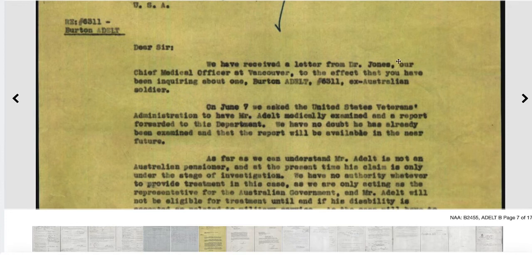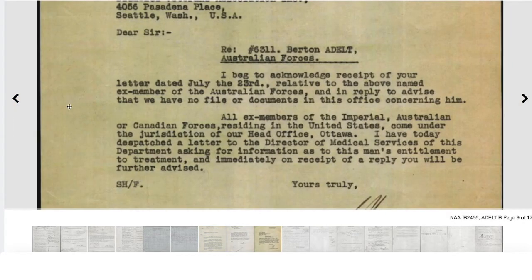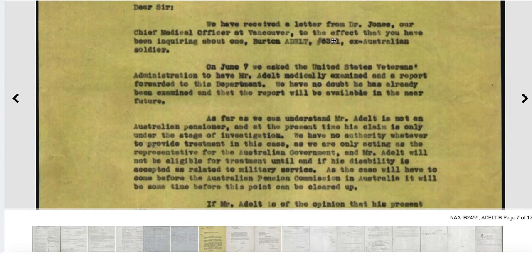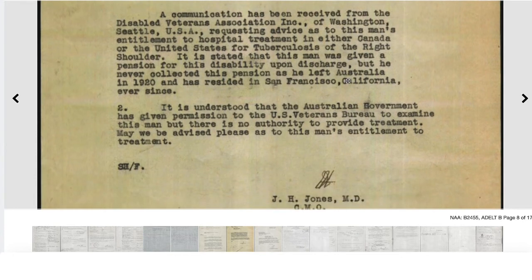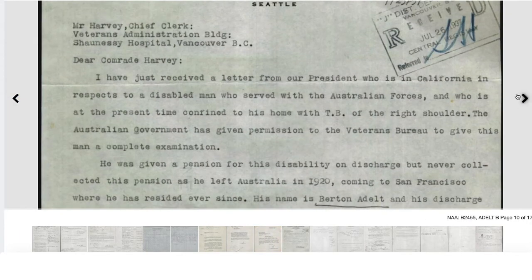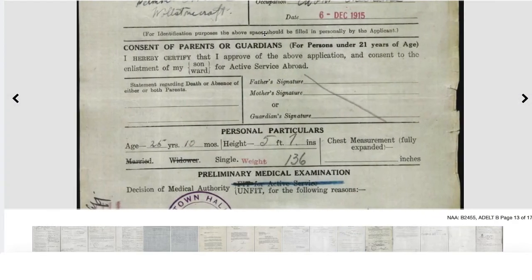Here is some interesting information: this and a few of the later documents in this file are correspondence about Burton's disability pension. He contracted tuberculosis during the war, was hospitalised and discharged as medically unfit. The correspondence inquires about receiving his war pension, which is problematic because he moved to America after the First World War ended in 1920. There's quite a lot of administrative back and forth about whether he can still receive his pension even though he's no longer in Australia.